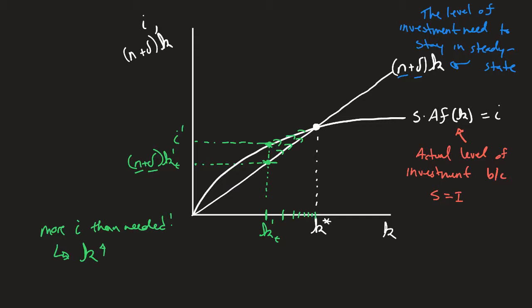And we look at the exact same thing but on the other side. What happens if we're over here? Let's call this kt double prime, so a different level of capital. But you notice that this level of capital is higher. This level of capital is higher than the steady state.